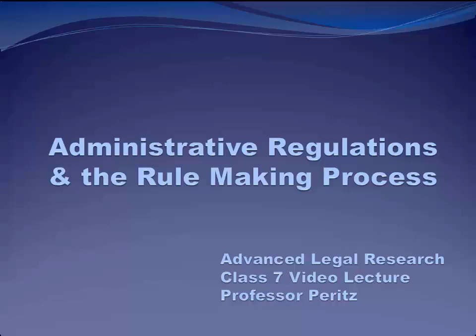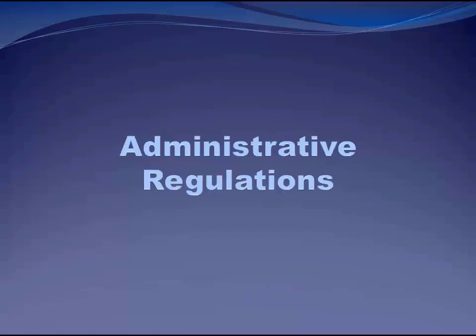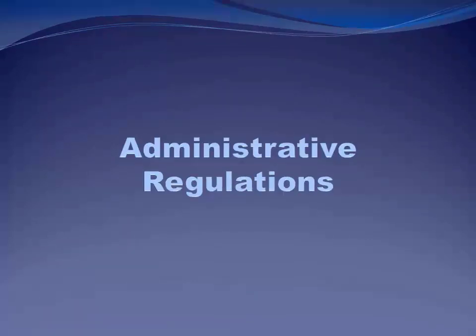So how does that happen? Congress is empowered to do two different things: make laws, which you're all familiar with, and delegate law-making power to other entities. Congress delegates primarily to executive branch agencies. We'll spend the rest of the class talking about administrative regulations and the administrative agencies that create this kind of law.